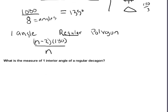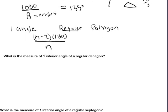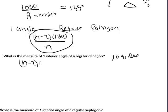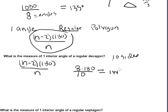Let's try another problem. What is the measure of one interior angle of a regular decagon? Just like a decade has ten years, a decagon has ten sides. Our formula is the total interior angle sum divided by the number of sides: n minus two times 180, divided by n. So for ten sides: ten minus two, or eight times 180, divided by ten, which gives you 144 degrees. Each interior angle of a regular decagon is 144 degrees.